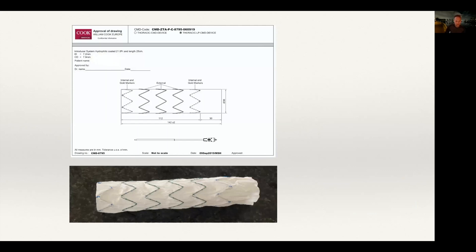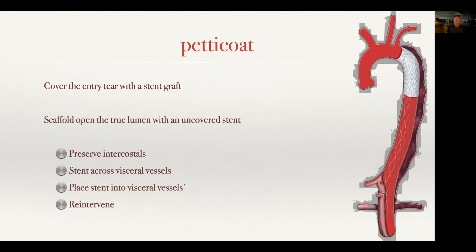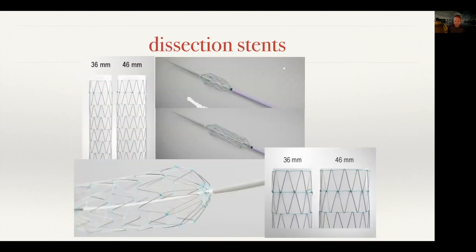The hybrid graft has a stented endovascular TEVAR portion distally and a redundant surgical graft segment proximally that can be cut to any length — 30 mm to 200 mm — and trimmed intraoperatively. It is loaded backwards so the distal end deploys first, antegrade over a wire into the thoracic aorta under direct vision. Once deployed, the remaining proximal surgical graft is re-anastomosed to the aortic root. This is the PETTICOAT technique, combining a stent graft with uncovered stents to scaffold the entire aorta.